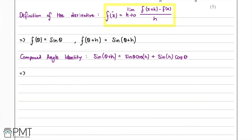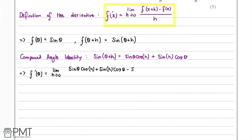This means f'(θ) is going to be equal to the limit as h tends to zero of sine θ cos h plus sine h cos θ, minus f(θ) which is sine θ, all divided by h.